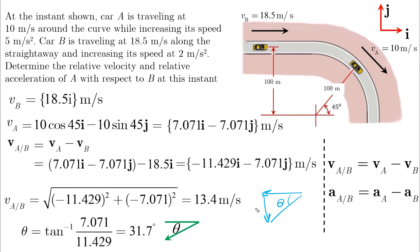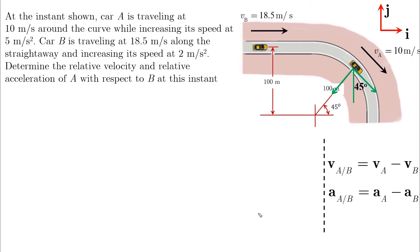The angle is found using tan inverse of Y over X. As for the acceleration, car B is increasing its speed at 2 meters per second squared, which is in the same direction as the velocity, giving us 2i.